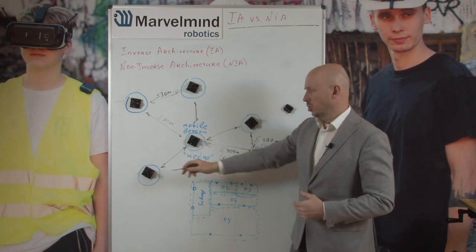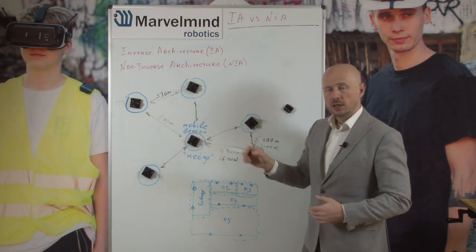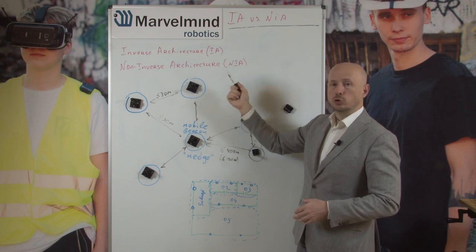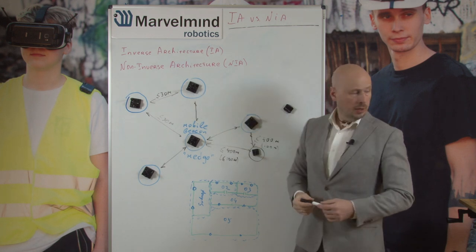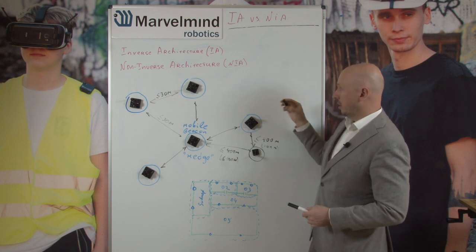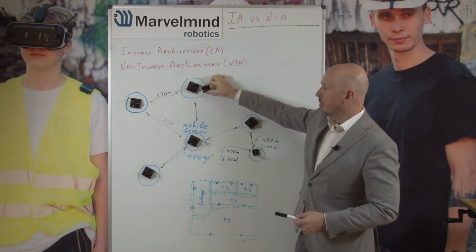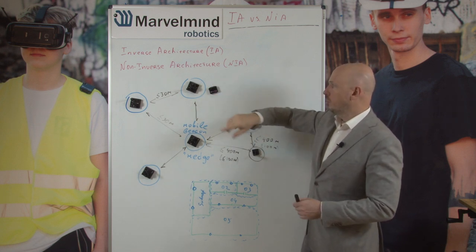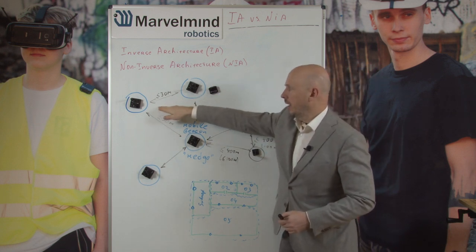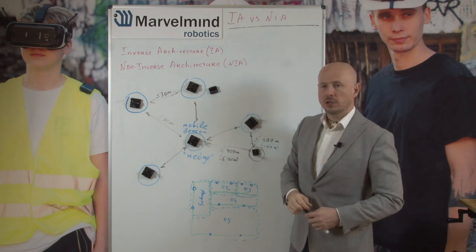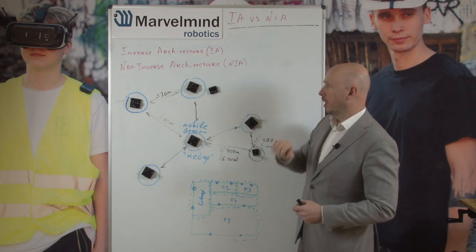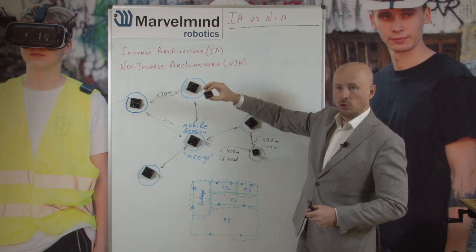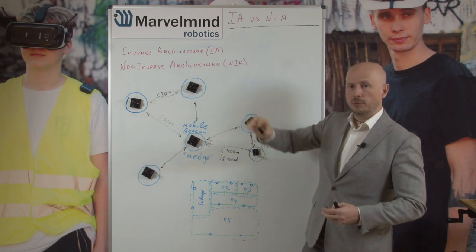Even in non-inverse architecture, stationary beacons may emit ultrasound if you are using beacon hardware version 4.9 or super beacons. However, if you use mini-RXs, those cannot emit ultrasound. In that case, for non-inverse architecture, you would need to provide the distances between stationary beacons manually, or provide their locations manually, because mini-RX is receive-only.